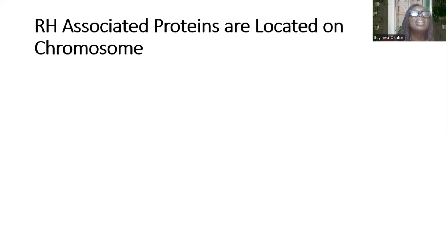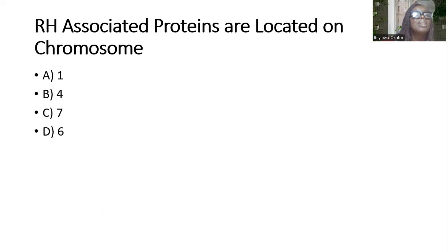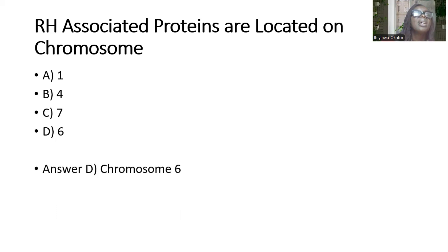RH-associated proteins are located on which chromosome — chromosome 1, 4, 7, or 6? And the answer is D — chromosome 6. The genes encoding RH-associated glycoproteins are located on chromosome 6.